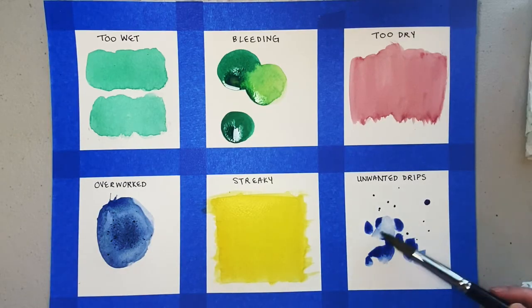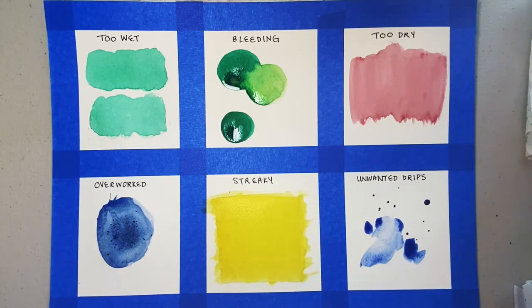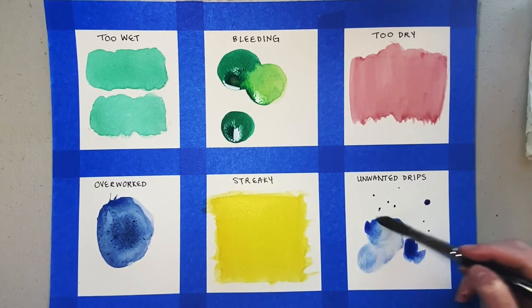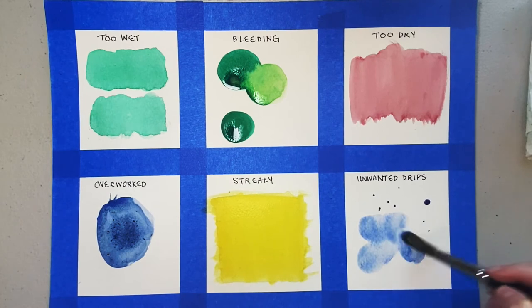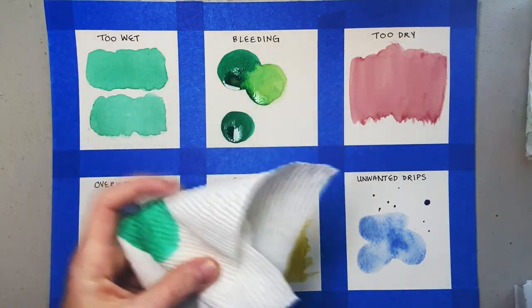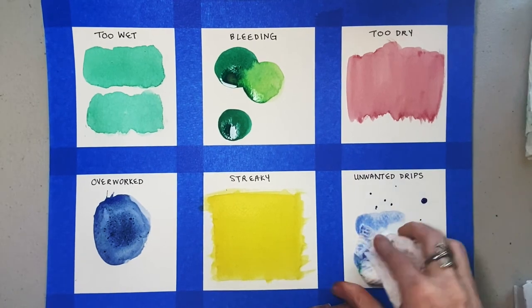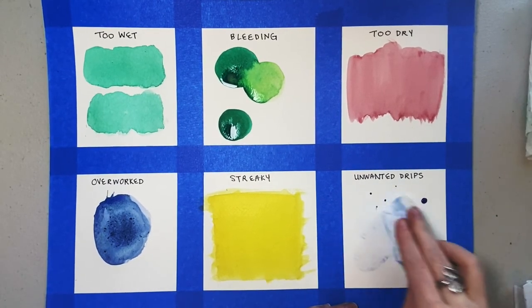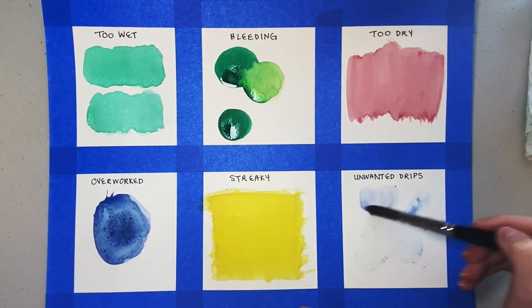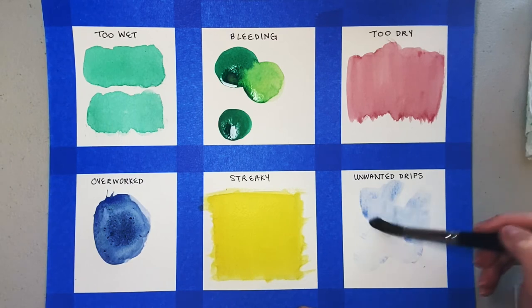The last problem that can happen are unwanted drips. This happens so often for me, so here's my trick. I actually add more water to the drip to dilute the pigment. Then I get a paper towel and pat it up. I repeat this process until the drip is completely gone. You can do this trick while the paint is wet or already dry. It's a lifesaver.